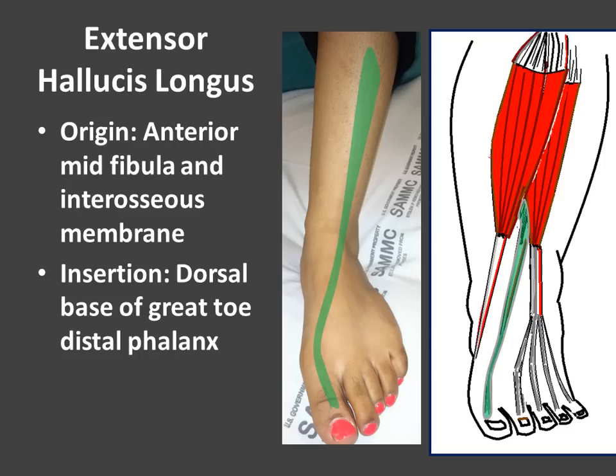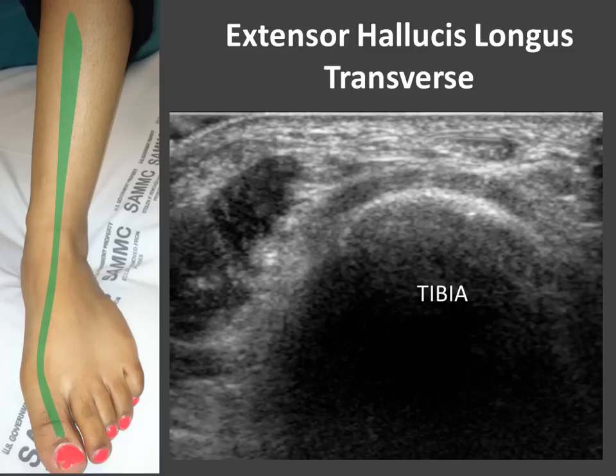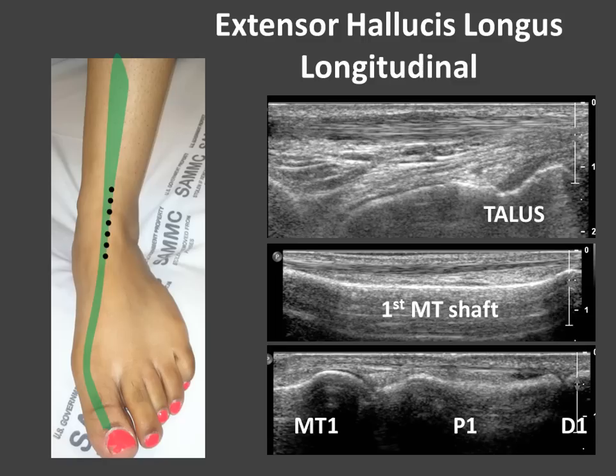Here's the extensor hallucis longus. It originates from the anterior midfibula and interosseous membrane, and inserts on the dorsal base of the great toe distal phalanx. In the transverse position, we see a nice ovoid hypoechoic tendon that can be followed along its course to the great toe. In the longitudinal position, we can lay out that tendon along its course — here depicted along the talus, the first metatarsal shaft, to its insertion on the distal phalanx.